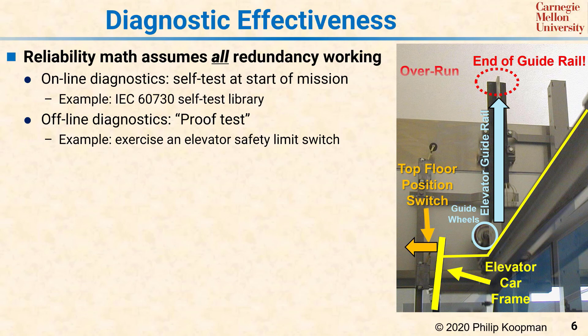There's an overrun safety switch to detect when the elevator has gone past the top floor and is about to run off the end of the rail—this switch is just there in case the top floor switch fails. But how do you know that the overrun safety switch is actually working? It should never be exercised when the elevator is working normally, so you have no idea in normal operation whether that switch works.